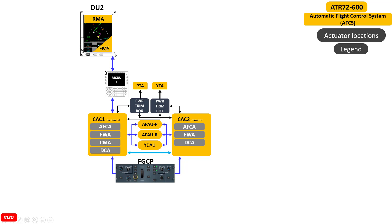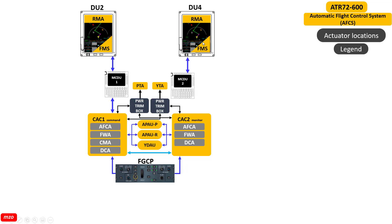This is the DU-2, which has the DU software including the radio management application and the flight management application. FMS is very important. DU-2 has FMS-1 and FMS-2, only installed in DU-2 and DU-4. FMS-1 for DU-2 and FMS-2 for DU-4.